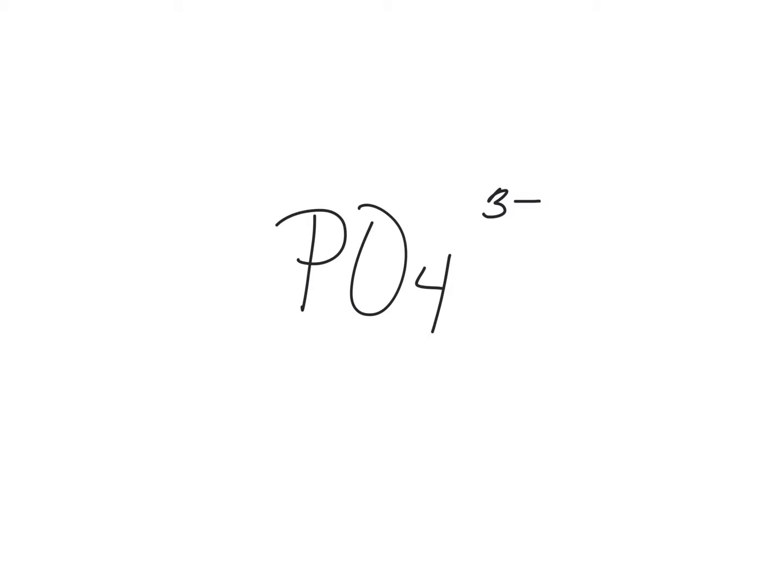We look at phosphorus, and there's no rule that tells us anything about phosphorus, so we assign it as X. Now we look at oxygen, and we know that it has an oxidation number of minus 2.